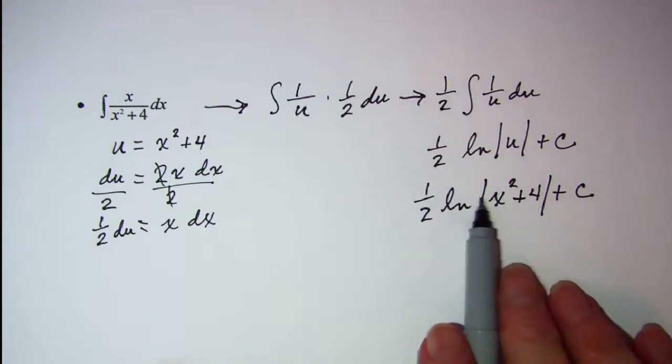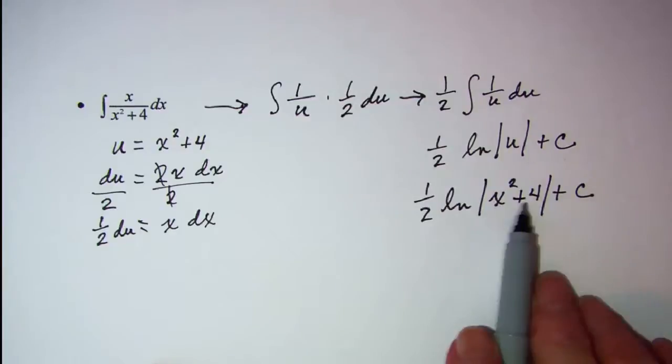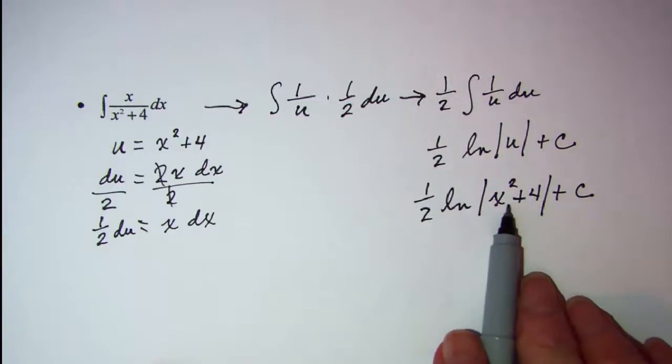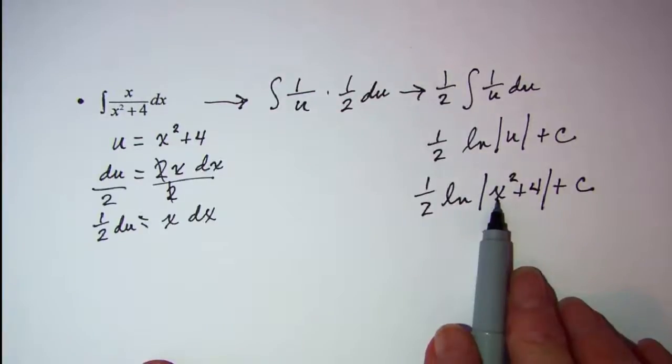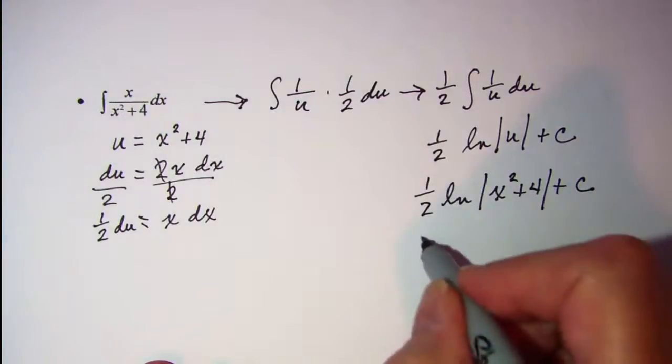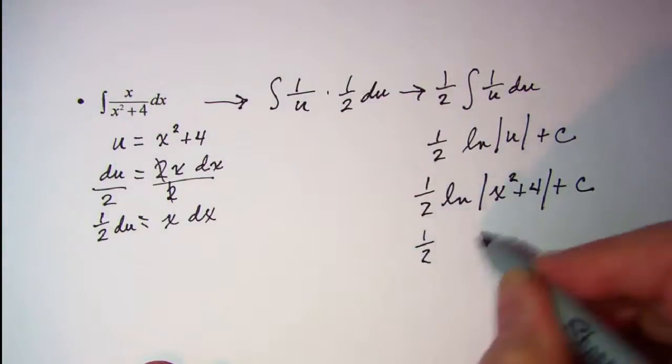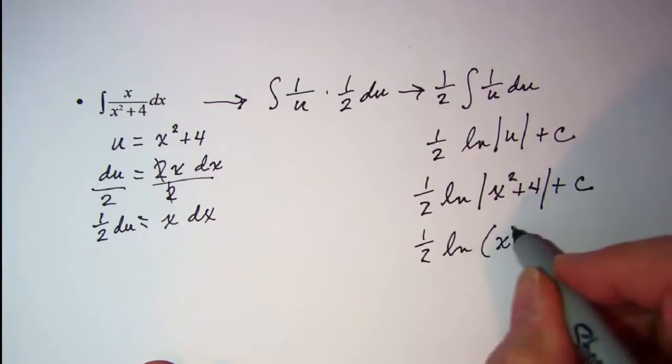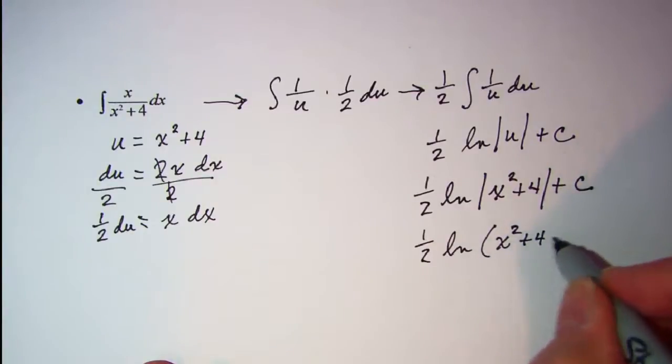Notice that x squared is always positive, and if you add 4 to that, you're still always going to have a positive number. So we really don't need this absolute value around the argument of our natural logarithm. So this becomes 1 half ln x squared plus 4 plus our constant.